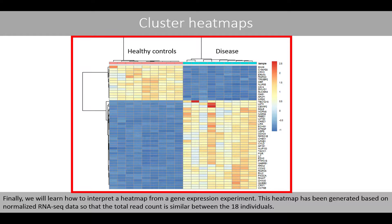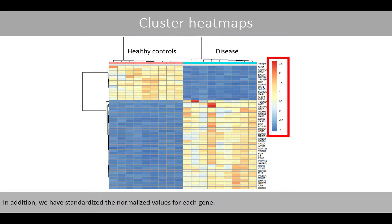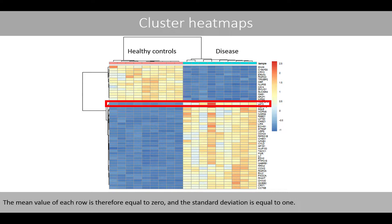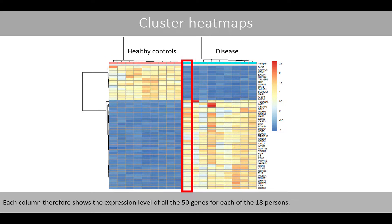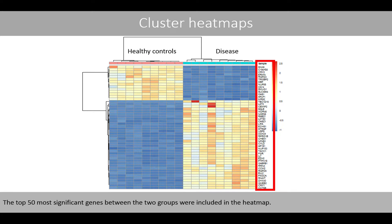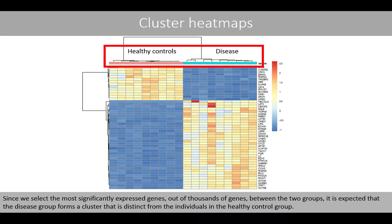Finally, we will learn how to interpret the heatmap from a gene expression experiment. This heatmap has been generated based on normalized RNA-seq data so that the total read count is similar between the 18 individuals. In addition, we have standardized the normalized values for each gene, so the mean value of each row is equal to 0 and the standard deviation is equal to 1. In this example, we have nine individuals with a certain disease and nine healthy controls. The top 50 most significant genes between the two groups were included, and since these were selected from thousands of genes, it is expected that the disease group forms a distinct cluster from the healthy controls.